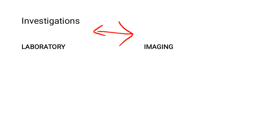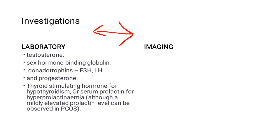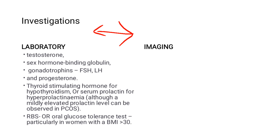For investigations, laboratory tests include testosterone and sex hormone binding globulin, gonadotrophins such as FSH and LH, progesterone levels, thyroid stimulating hormone to rule out hypothyroidism, and serum prolactin to rule out hyperprolactinaemia, noting that a mildly elevated prolactin level can be observed in PCOS.